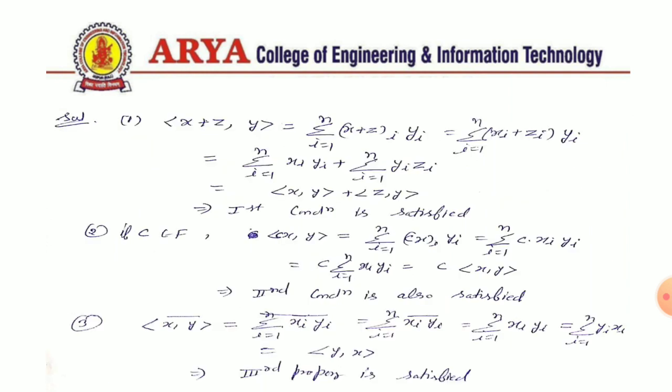To prove this, we verify all conditions of inner product space. The first condition: inner product of (X+Z, Y). By applying the definition given in the question, this equals summation from i=1 to n of (X+Z)_i · Y_i. After calculation, we get inner product of (X, Y) plus inner product of (Z, Y), which is true by the definition of inner product.